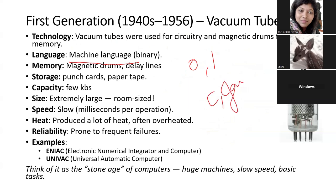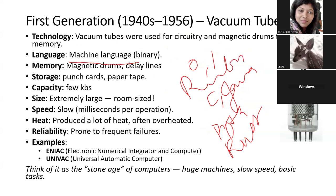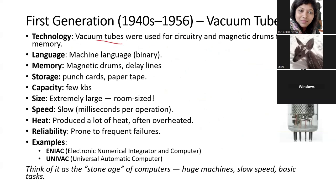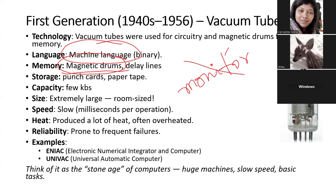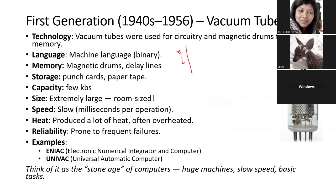Today we use C, Java, Python, Rust, Ruby, and many other languages, but in the first generation the only language was binary — machine language. The memory used in first generation computers was magnetic drums. There was no monitor; input was given using punch cards, and there was no screen like we have today.